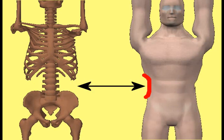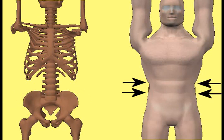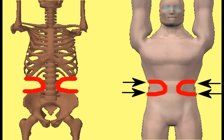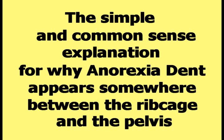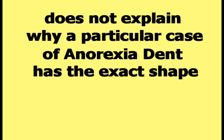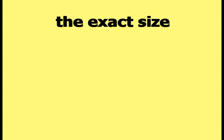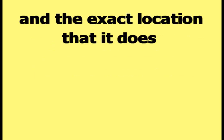There are no bones in the area of the torso where anorexia dent appears. That means the flesh and muscle in that area can shrink in towards the spine by any physically possible amount. However, the simple and common sense explanation does not explain why a particular case of anorexia dent has the exact shape, the exact size, and the exact location that it does.